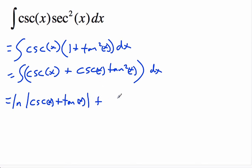And to handle this integral here, what I'm going to do is I'm going to change these into sines and cosines and see what happens. Cosecant is 1 over sine x, and this is going to be sine squared x over cosine squared x.